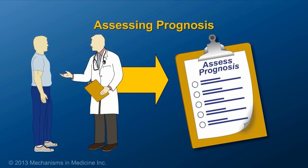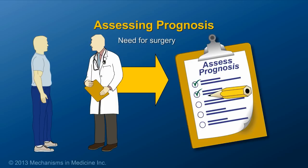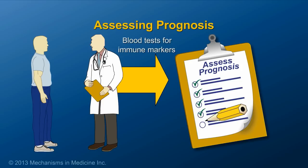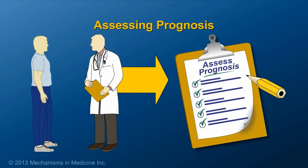Prognosis can be determined by clinical factors, such as the age of diagnosis of the patient and the need for surgery or for steroids. But there are also newer strategies to determine prognosis, which include blood tests for immune markers and genetics. In the future, these may help doctors choose treatments.